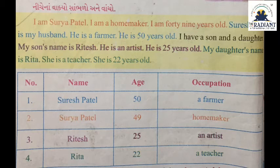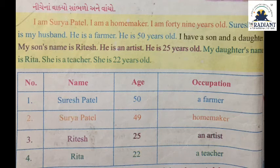અહીં આપેલ ટેબલ જુઓ. એમાં નંબર આપેલ છે, નામ આપેલ છે, age (ઉંમર) અને occupation (વ્યવસાય). First number: Suresh Patil — age 50 years — occupation: farmer. Second number: Surya Patel — age 49 — occupation: homemaker. Third number: Ritesh — age 25 years — Surya Patel નો son — occupation: artist. Fourth number: Surya Patel ની daughter — age 22 years — occupation: teacher.